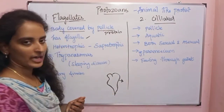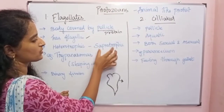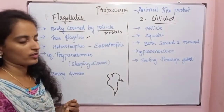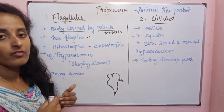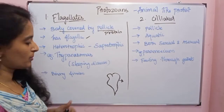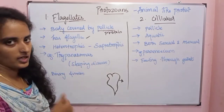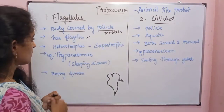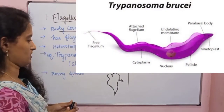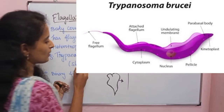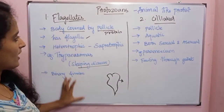Flagellates show heterotrophic nutrition — saprotrophic, parasitic, or holozoic. Reproduction is asexual, by binary fission. An example is Trypanosoma, which causes sleeping sickness. Next is the ciliated protozoans.